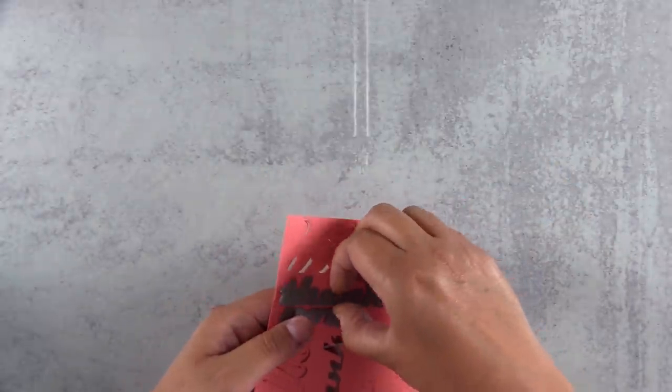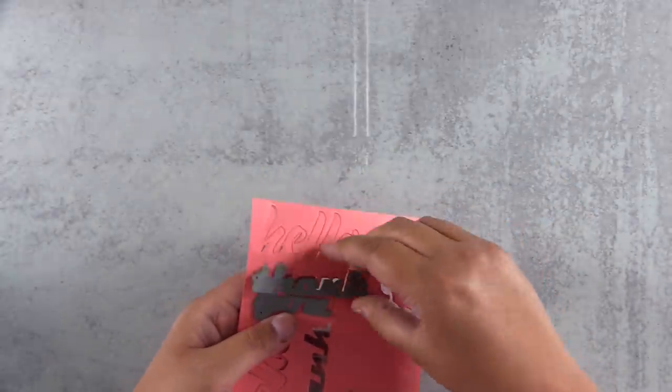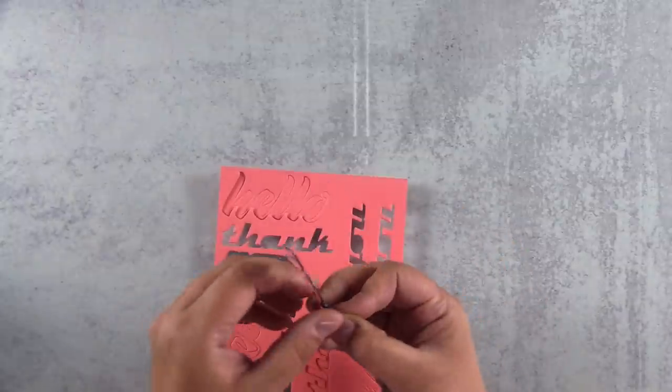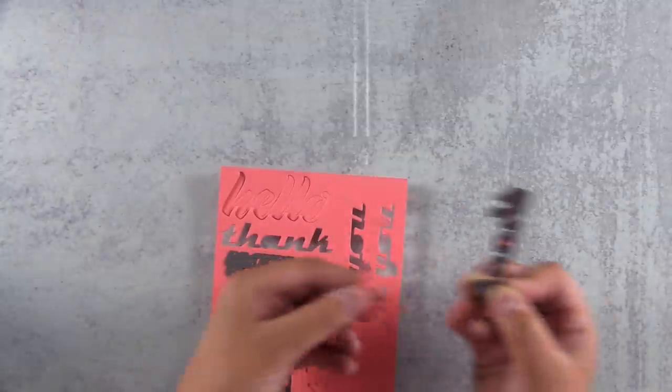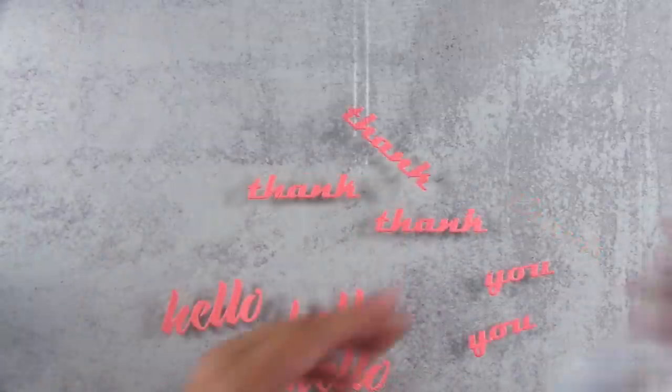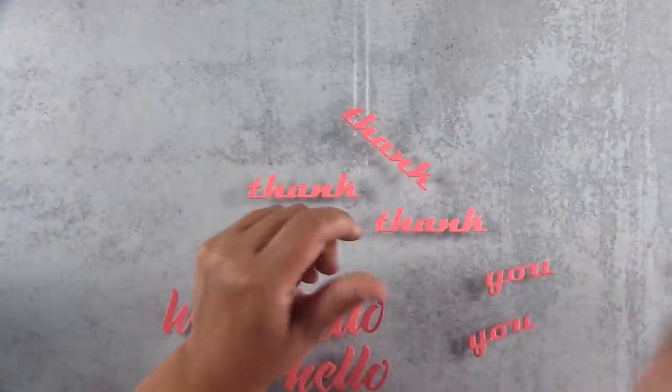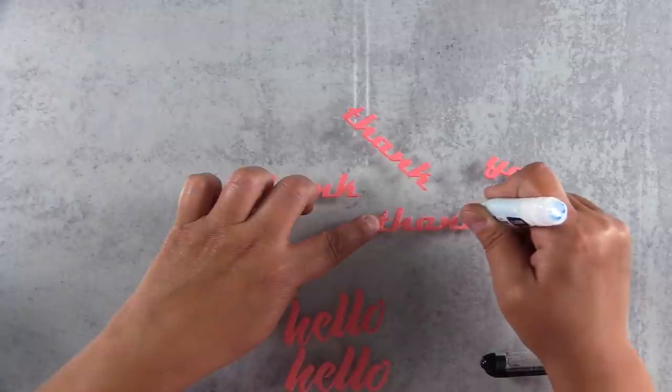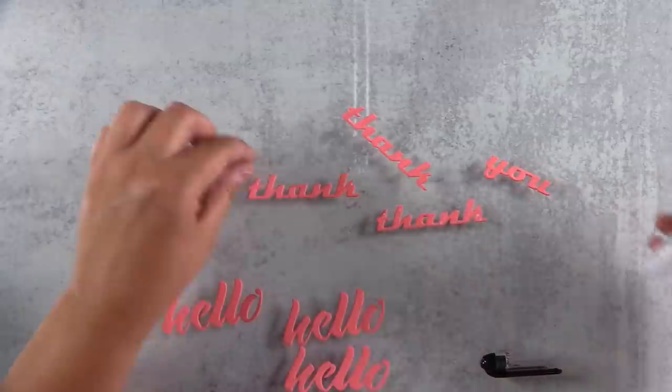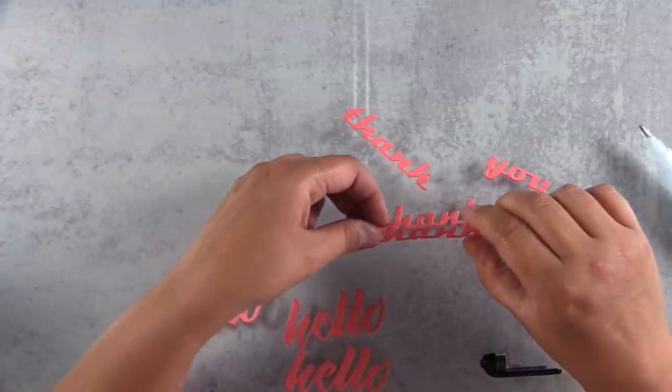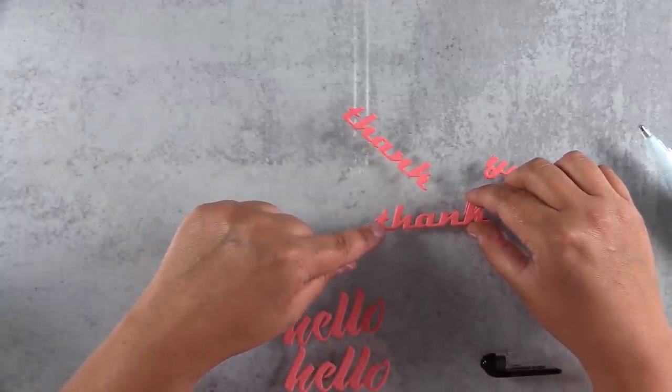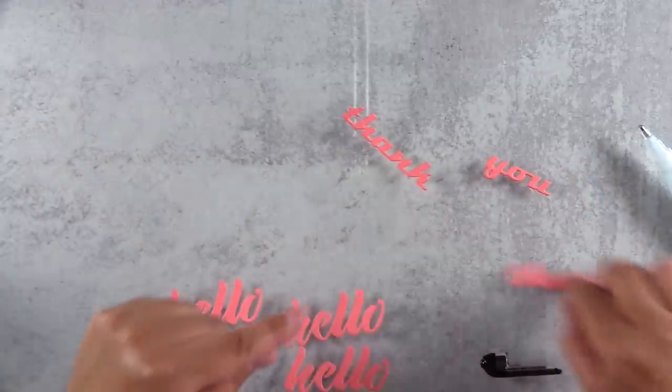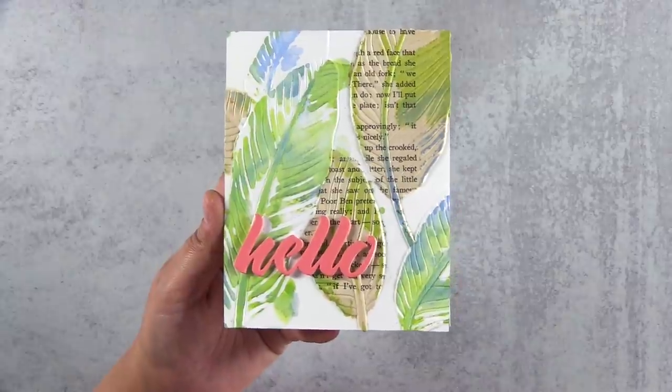I opted for some coral cardstock here and I've used the bold greeting dies, the thank you dies from bold greetings and the hello die that you see is actually from the envelope liner set. Here's the two-in-one glue pen and I'm just going to add these layers together. I've cut three to four layers of each of these so I can stack it up and get some good dimension.